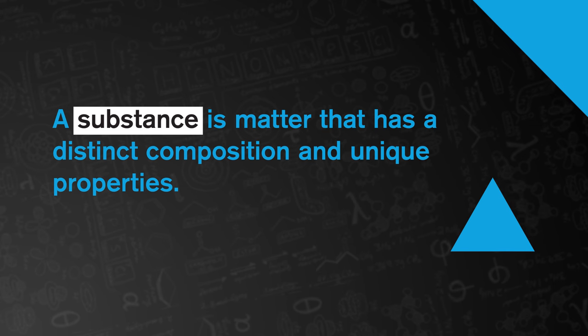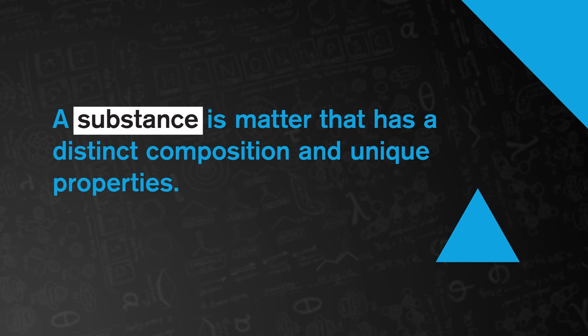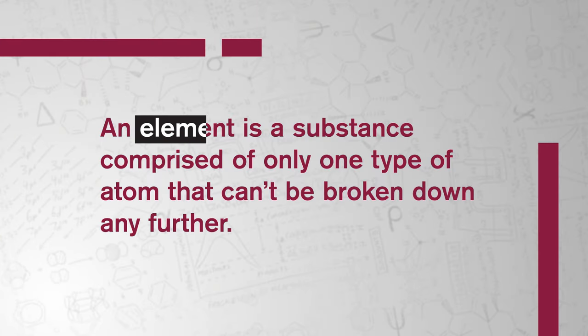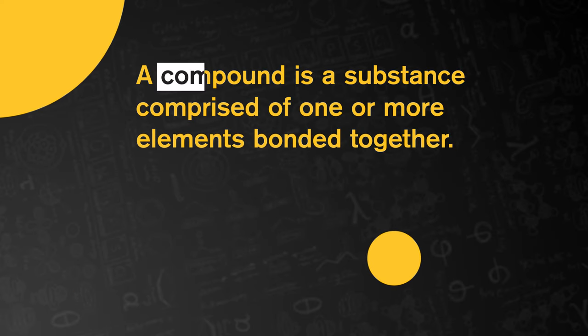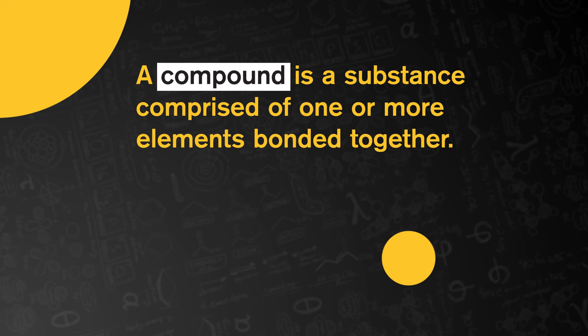We can't dive right into the world of chemistry without defining a few things. First, a substance is matter that has a distinct composition and unique properties — it's like a person with a certain look and personality. When we say substance, we might mean an element, a substance comprised of only one type of atom that can't be broken down any further. Or we might be talking about a compound, a substance comprised of one or more elements bonded together. When we think about change from a chemistry perspective, there are two main kinds a substance can experience: physical and chemical.